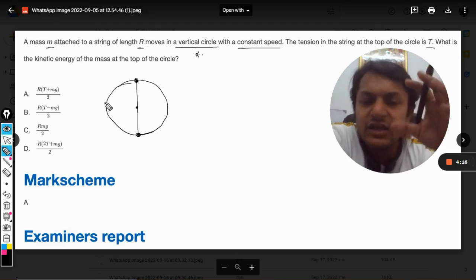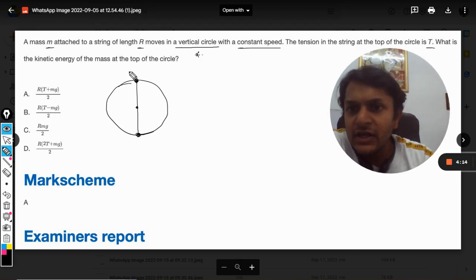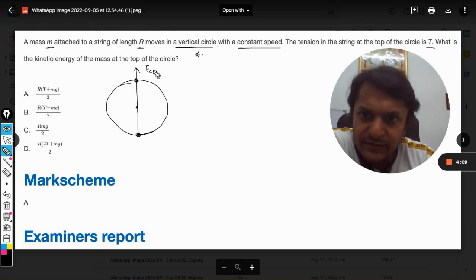are acting on the mass and how they are acting. First of all, there will be a centrifugal force here, and there will be a weight downwards, so that will be taken as mg. And there will be tension